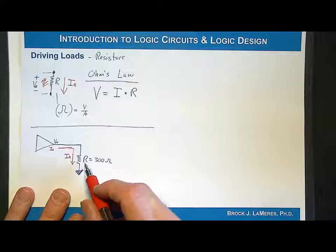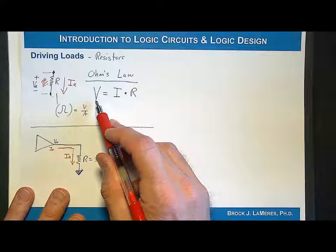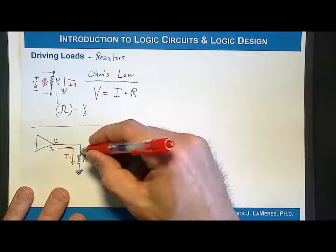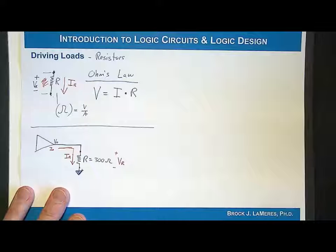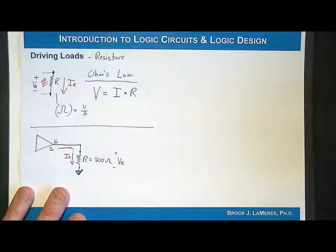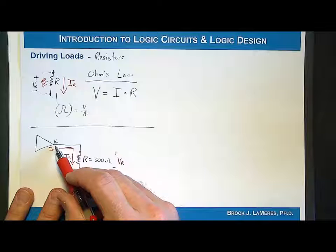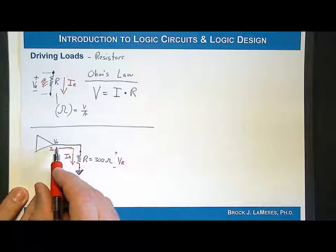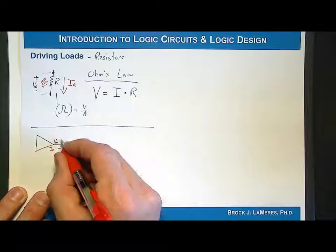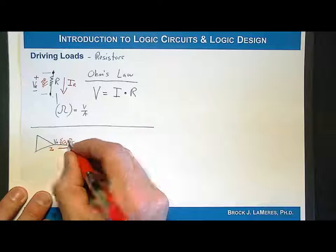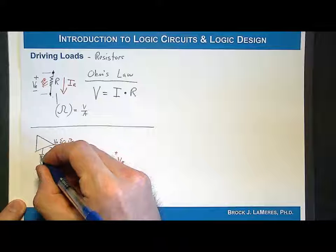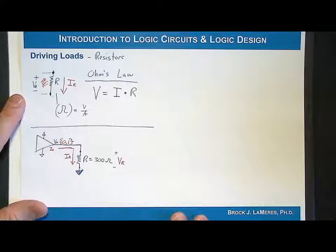Ohm's Law tells us how much current will flow based on the voltage across this resistor, which we define as VR. The voltage across that resistor is dictated by the output voltage of the transmitter. When driving a resistor with a digital gate, the output is either a zero or a one — we need to know what voltages those correspond to based on the logic technology.